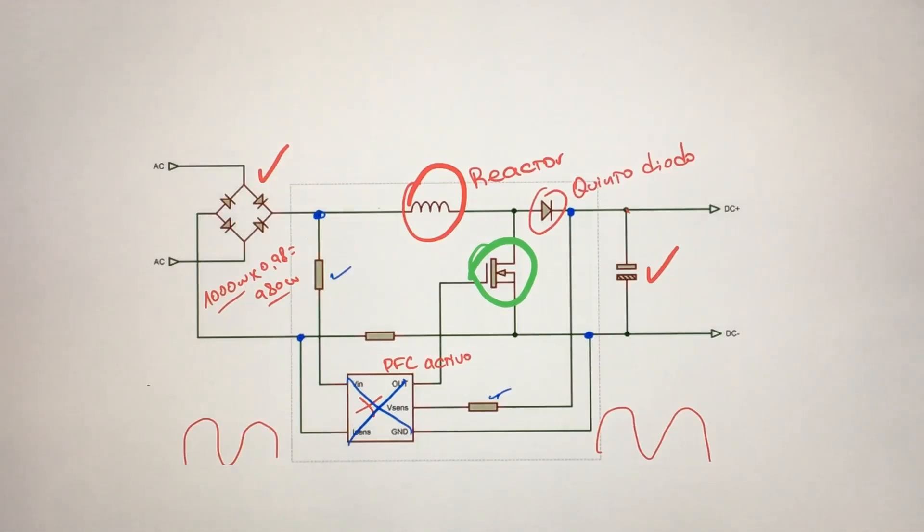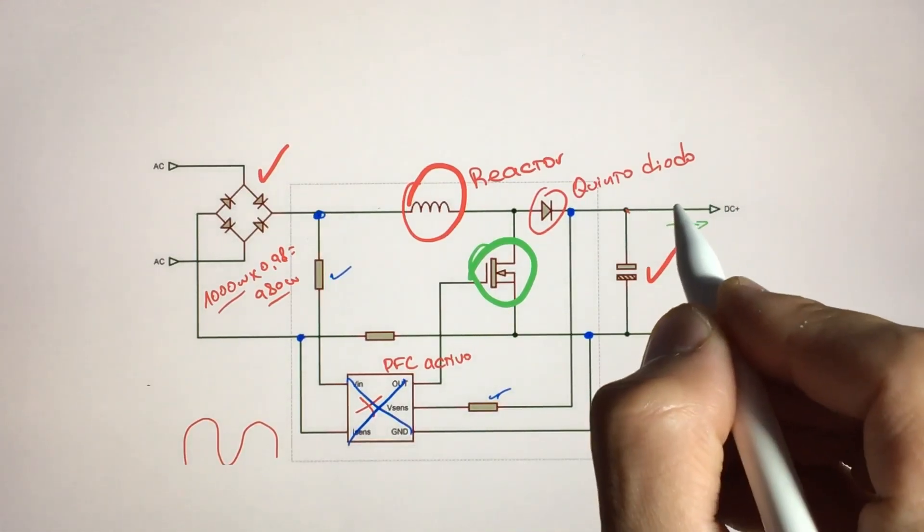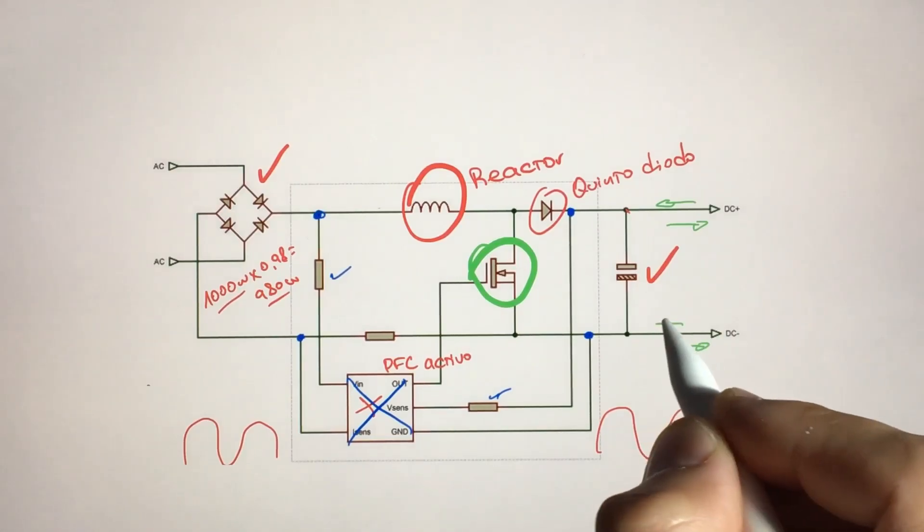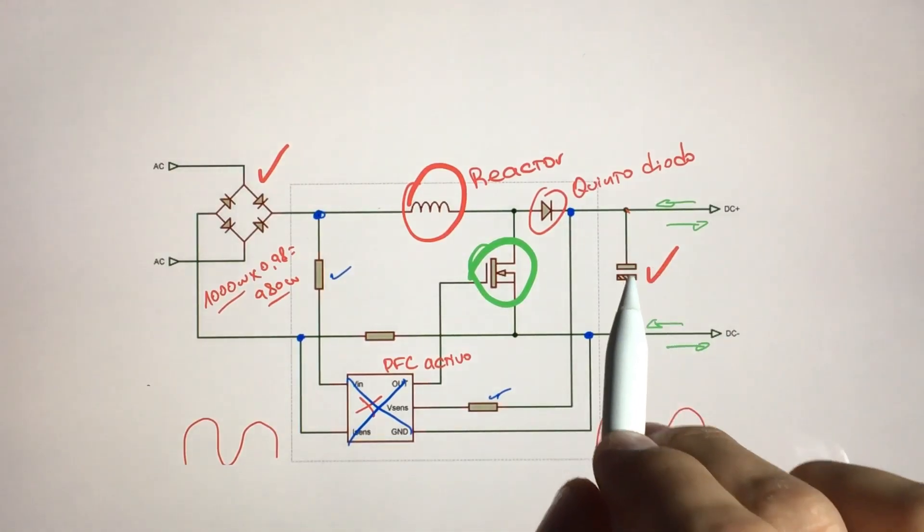So what's it going to do? It's going to know if electrons are going that way or that way, and it also knows if they're going there or there because of the capacitor effect.